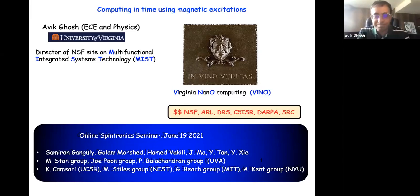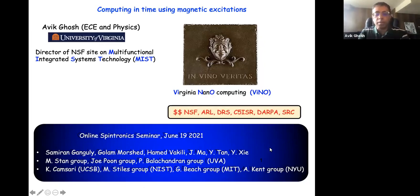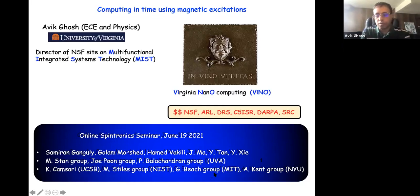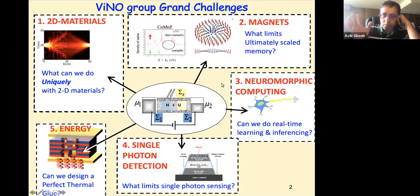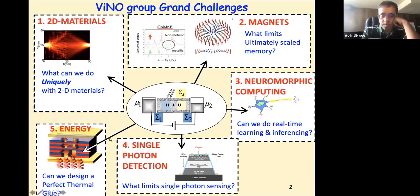Thank you very much. It's a pleasure to be able to talk about some of our work. Let me start off by acknowledging the people who really did all the work — the students and postdocs in our group. We collaborate a lot with other groups, both at UVA and at other universities. Our funding comes from various sources, from the DOD to the National Science Foundation to the Semiconductor Research Corporation. Our group uses transport theory — basically non-equilibrium physics — to look at various systems.